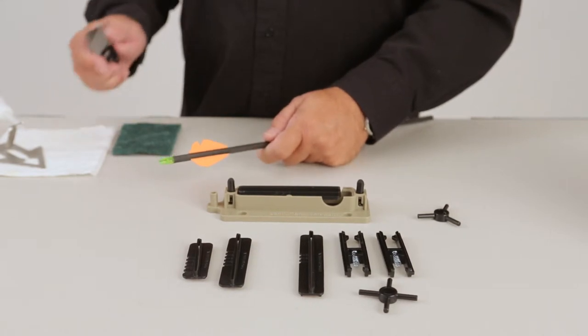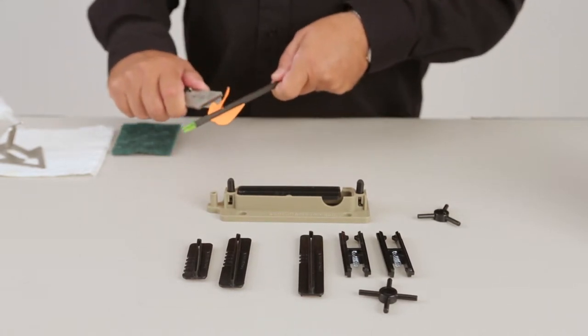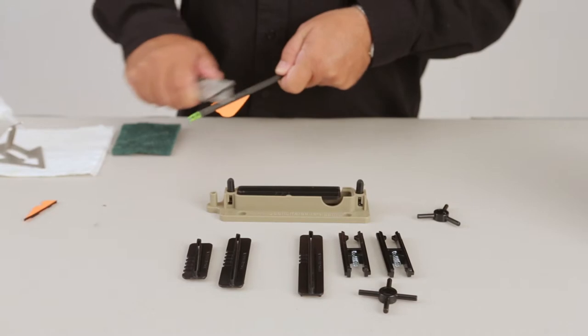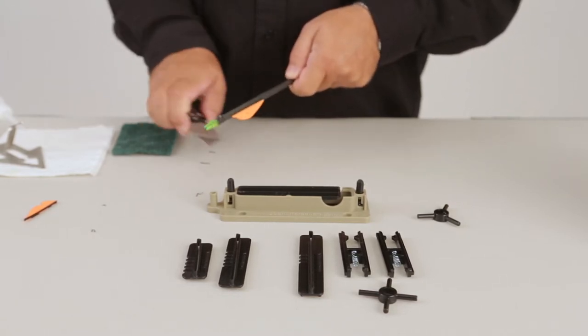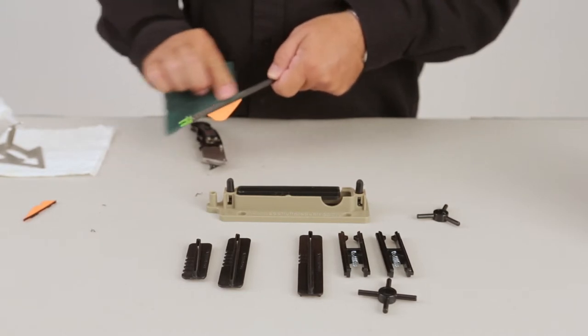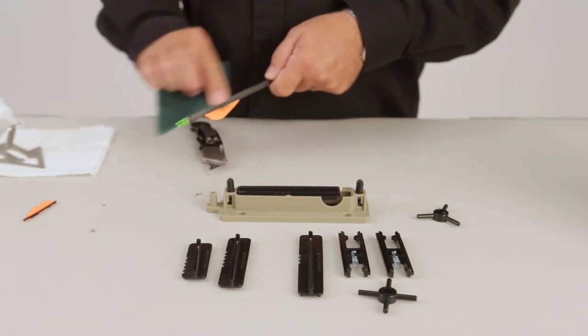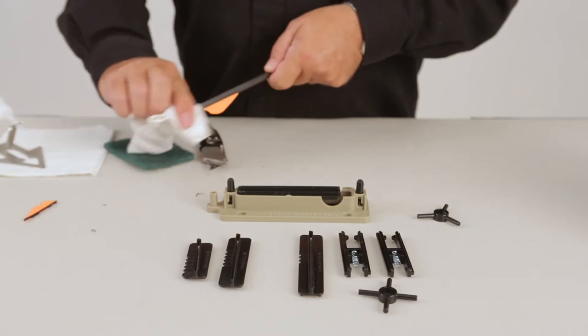This is the damaged vane that we're going to replace. You remove that vane. You will scrape the excess glue. I recommend using a Scotch-Brite pad to smooth that out and take anything that might still be there. Then wipe that off.